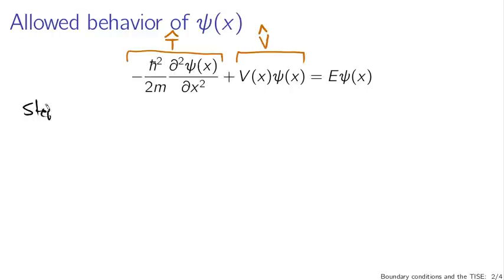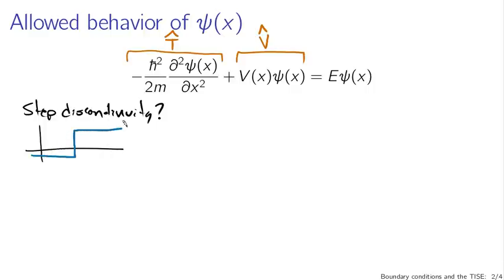Suppose we had a step discontinuity in psi. What psi would look like under those circumstances is something coming in on one side and going out on the other, with a jump in an infinitely narrow region — that's what we call a step discontinuity. If we wanted to look at the kinetic energy associated with this, we need to take the second derivative of psi. Taking the first derivative of a step function gives us a delta function.